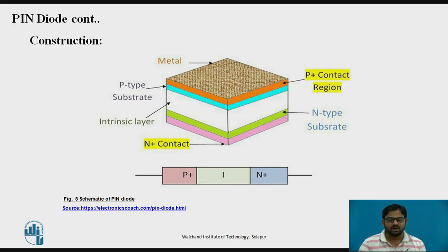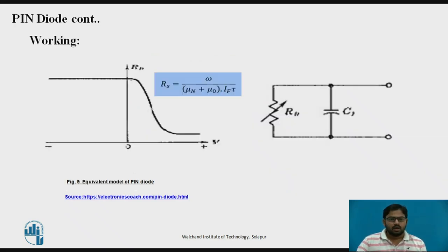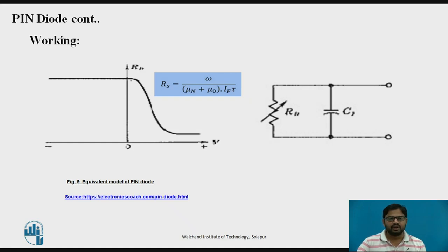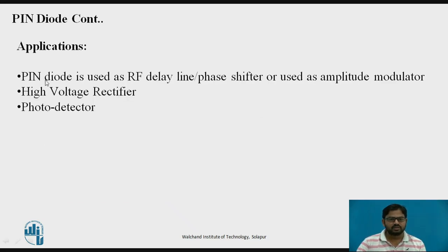In the working of the PIN Diode, the series resistance is directly proportional to frequency, and it also depends on voltage. As positive voltage changes, it acts as a variable resistor, which is also reflected in the circuit model. So while the Varactor Diode acts as a variable capacitor, the PIN Diode acts as a variable resistor for high frequency applications. Applications include use as a light detector, high voltage rectifier, phase shifter at high frequencies, and amplitude modulator.